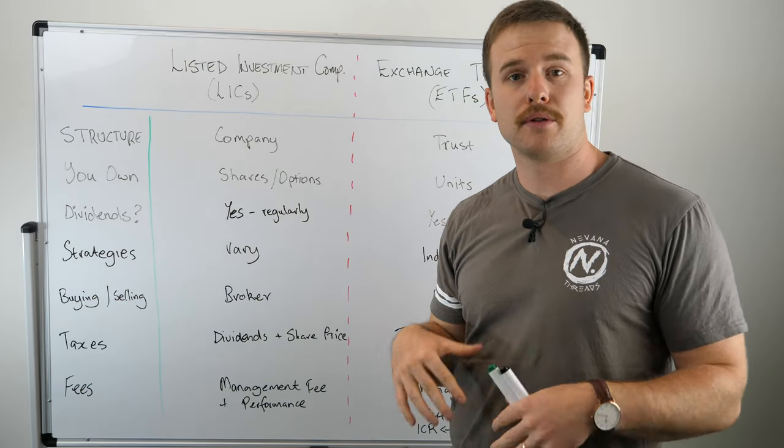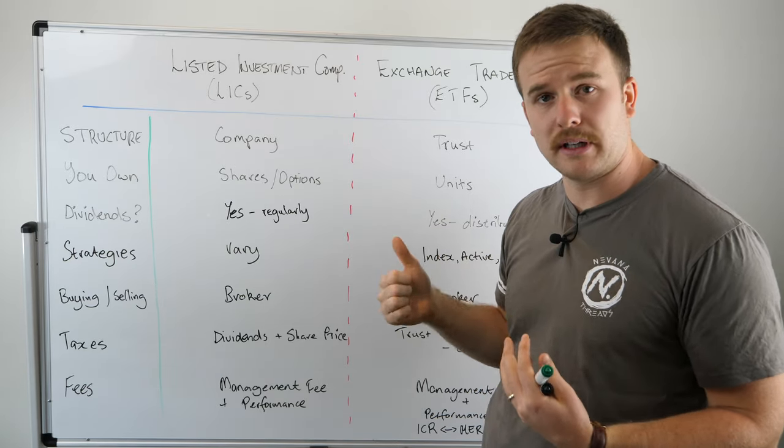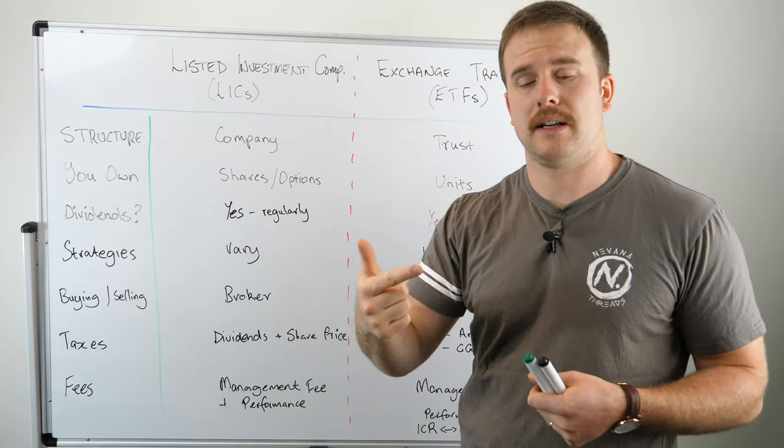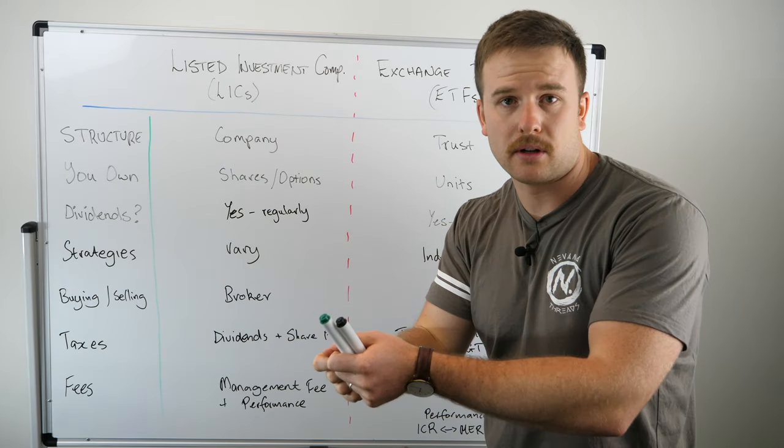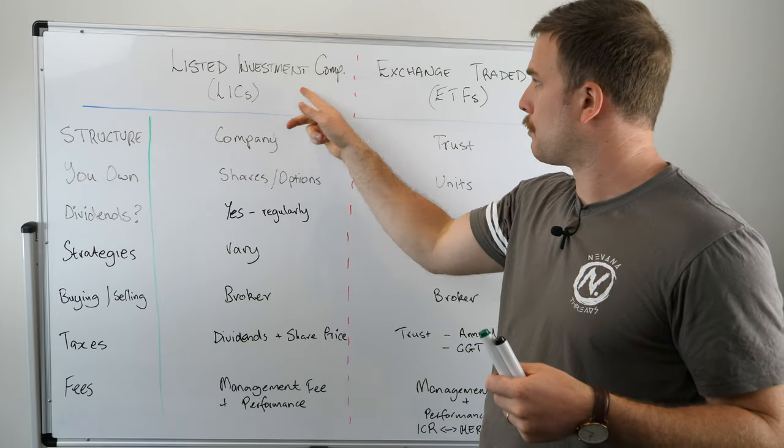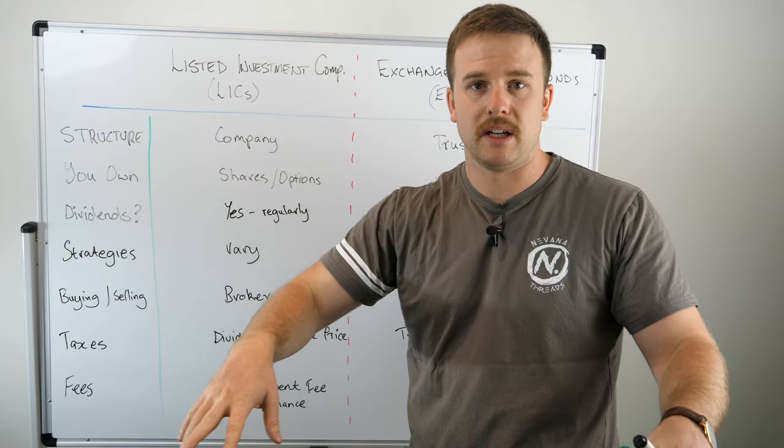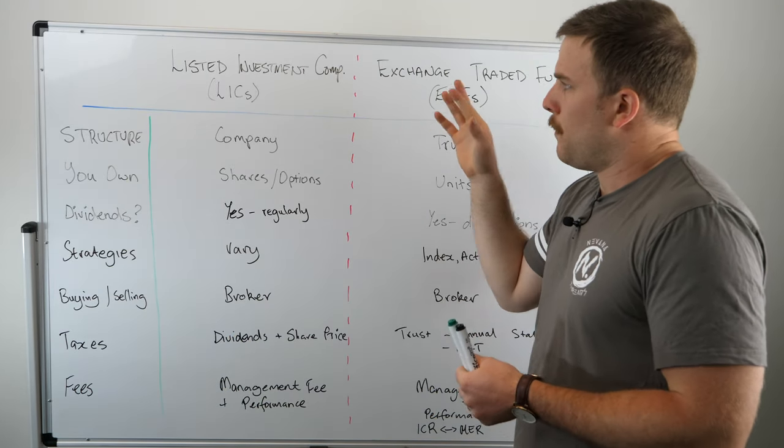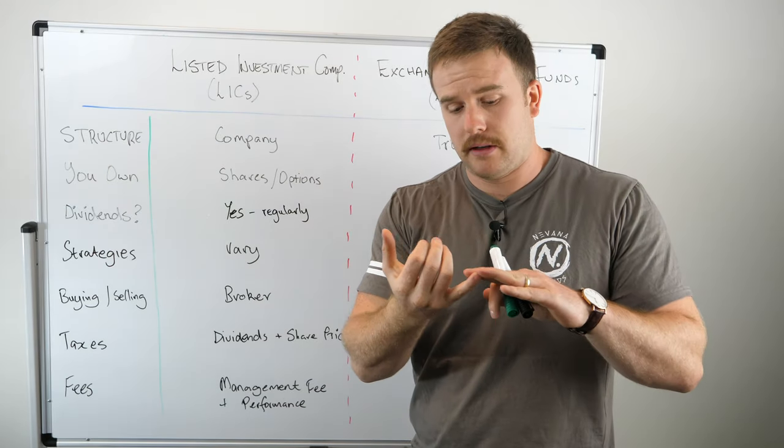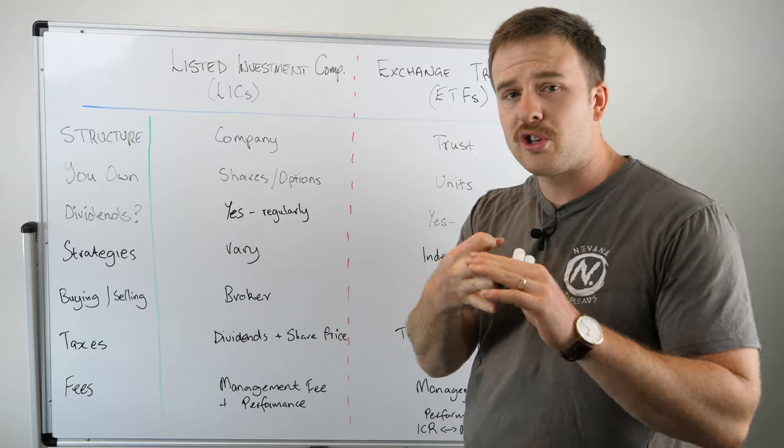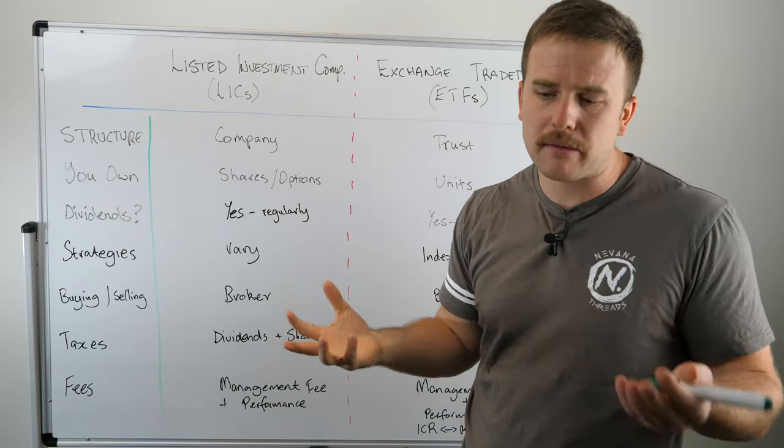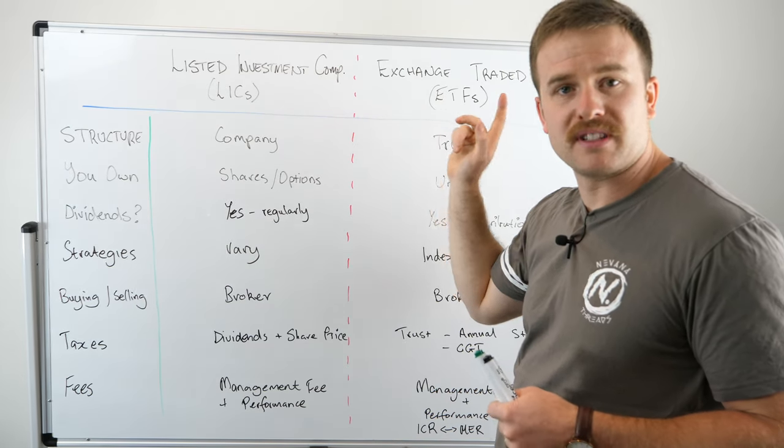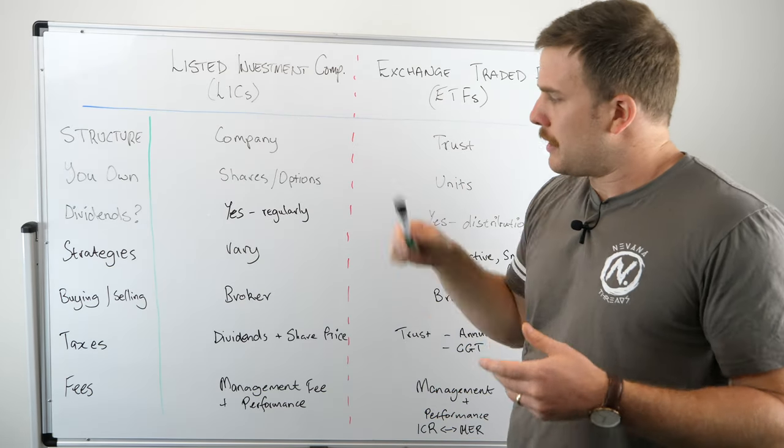Why would you be interested in either of these two things? Because you want to invest in them, and when you invest in them, whoever controls the ETF or the LIC then invests that money for you in a diverse range of investments. For example, if I have $500 or $1,000 and I've got my share broking account all set up, I can go onto the stock exchange and find an ETF or an LIC and put my $1,000 in there. Let's get into the differences.